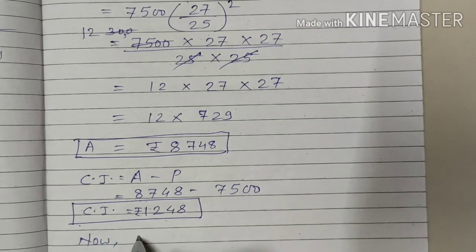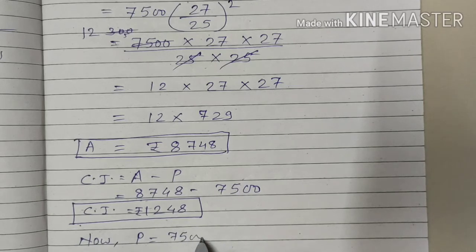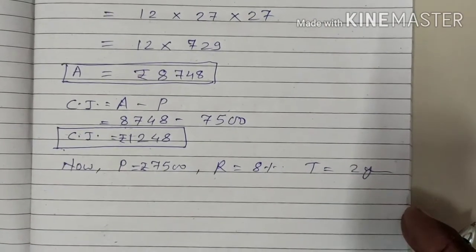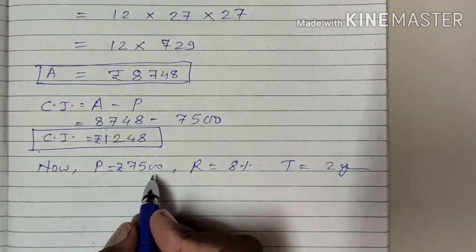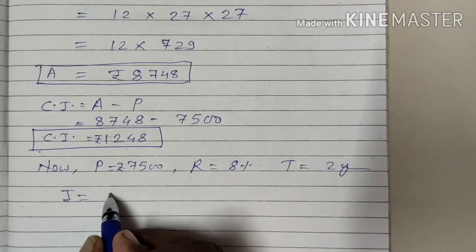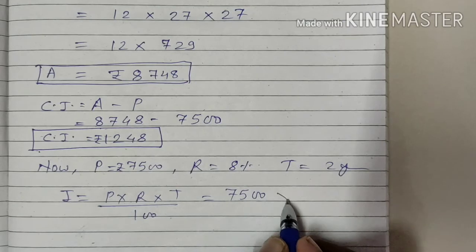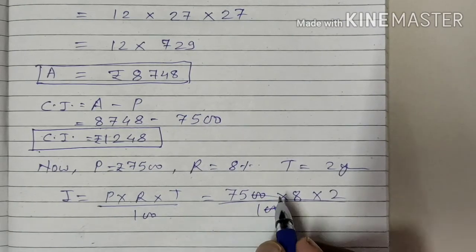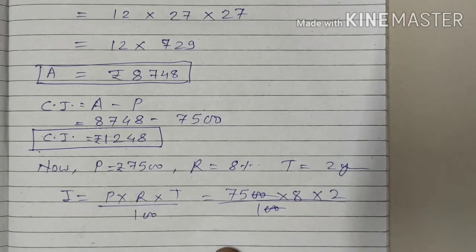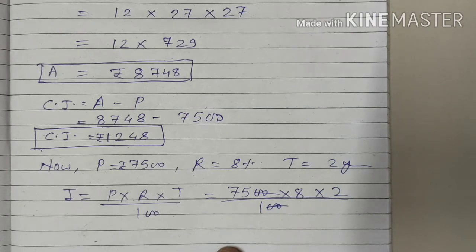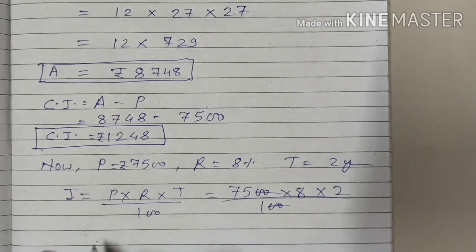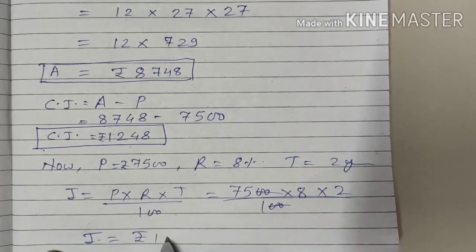Now let us find out the simple interest. The principal is 7,500, rate of interest is 8%, and the time is 2 years. Using the formula SI = PRT upon 100: 7,500 multiplied by 8 multiplied by 2 upon 100. Zeros cancel, giving 75 multiplied by 2 which is 150, multiplied by 8, giving us Rs. 1,200. So the simple interest is Rs. 1,200.